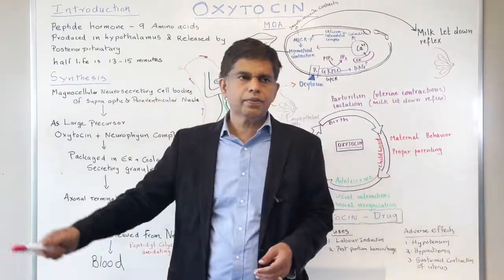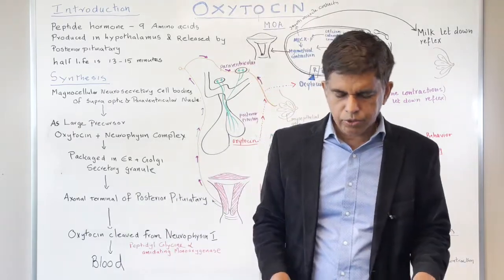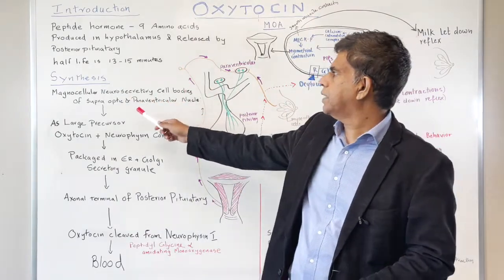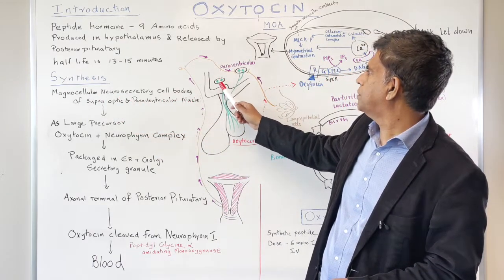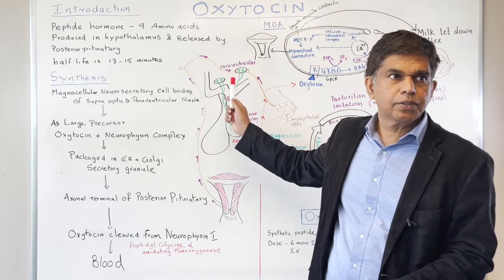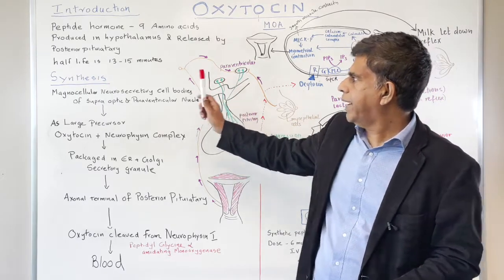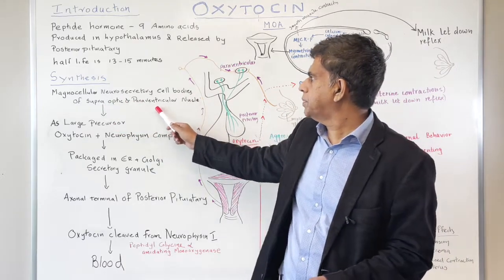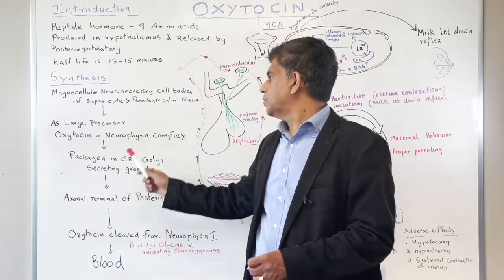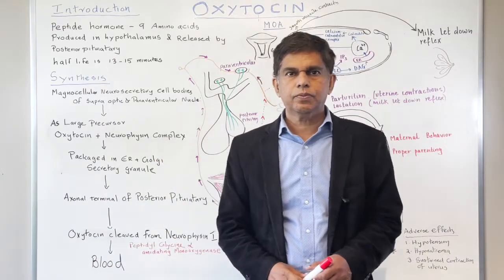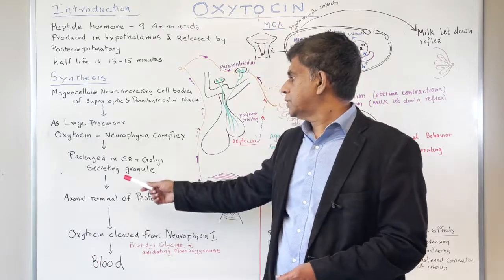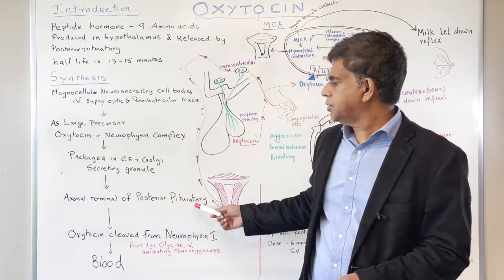Let's look at the synthesis of oxytocin. We have magnocellular neurosecretory cell bodies in the supraoptic and paraventricular nuclei of the hypothalamus — remember, most of the actions happen in the paraventricular nuclei. Initially, the precursor is an oxytocin-neurophysin complex formed together. It's packaged in the ER and the Golgi bodies into secretory granules, then transported to the axonal terminal in the posterior pituitary.